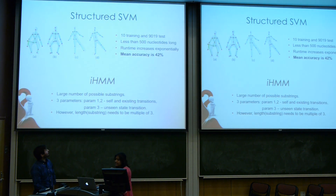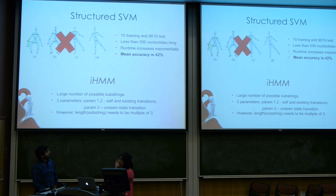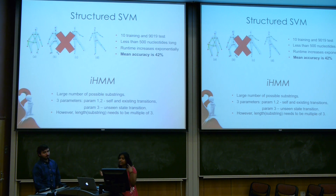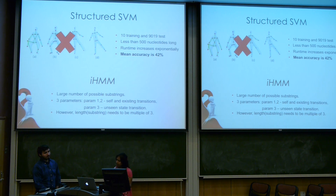We tried using a structured SVM for the classification; however, the DNA sequence does not really have much structure to it, and we didn't expect the structured SVM to do very well. As you can see, the mean accuracy is 42%, and we were not able to use a lot of training data because the running time increases exponentially. The reason was that we were neither able to define a proper or meaningful map between the class labels and the training data.